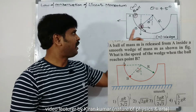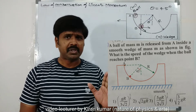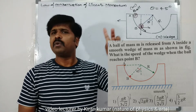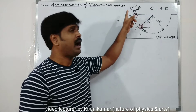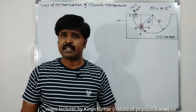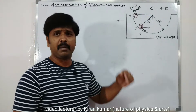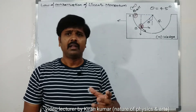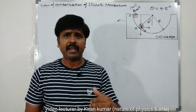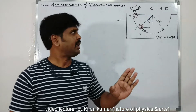We will use two laws: conservation of linear momentum to find the velocity of the ball at position B, and conservation of energy to find the velocity of the wedge. Now, both the ball and the wedge have mass m. This is possible because the ball is made of metal with high density, and the wedge is made of wood with less density — different sizes but same mass.